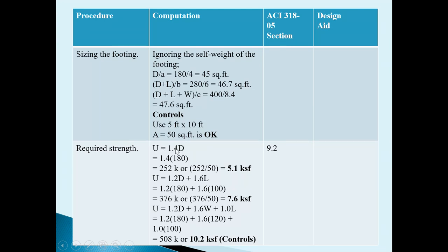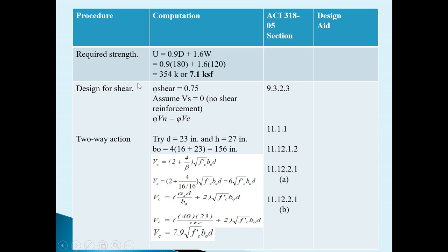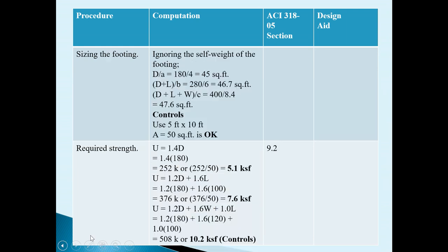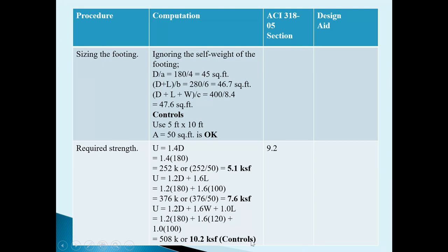For required strength, in the previous case we considered U1 = 1.4D and U2 = 1.2D + 1.6L. In this case there is an additional load combination including wind load. Among these three load combinations — dead load only, dead plus live, and dead plus live plus wind — the maximum required strength controls the design.